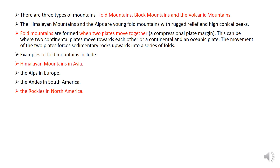There are three types of mountains: fold mountains, block mountains, and volcanic mountains. The Himalayan mountains and the Alps are young fold mountains with rugged relief and high conical peaks. As young fold mountains undergo constant erosion and become old, they become rounded.